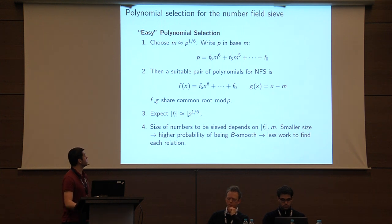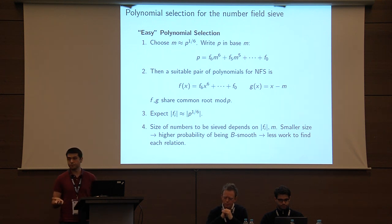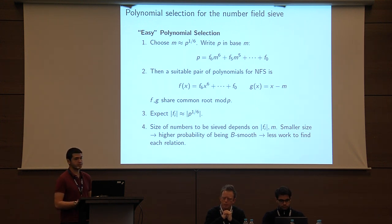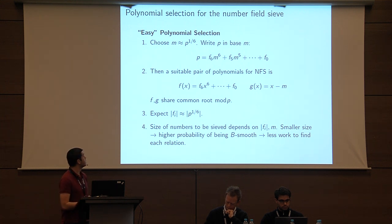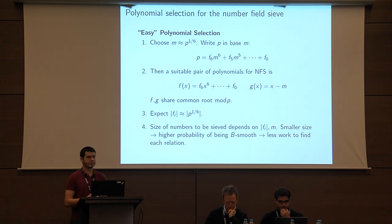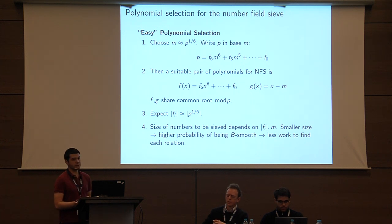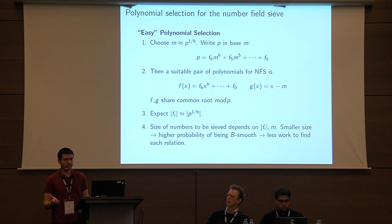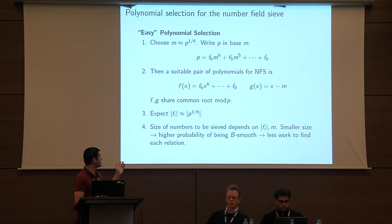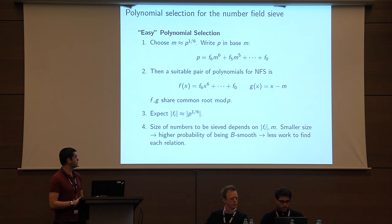Jumping back to polynomial selection: the goal is to pick a pair of polynomials that share some common root modulo the prime you're targeting. An easy way to do this is to pick some m roughly the size of the sixth root of p, write p in base m, and take the coefficients for your first polynomial. For the second polynomial, write x minus m. It's clear that when evaluated at m, both are 0 mod p. Using this construction, we expect coefficient sizes around the sixth root of p, which has an important impact on the sieving stage — smaller coefficients mean smaller norms and a higher probability of factoring completely below your bound.